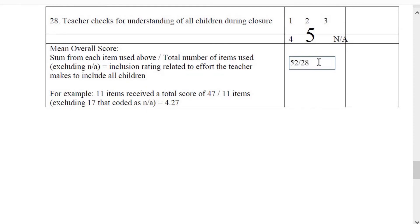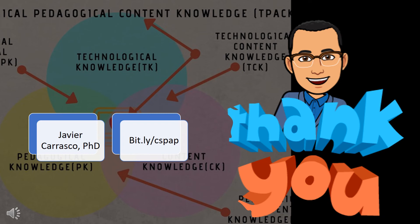In total, the sum from each item used above was 52. The total number of items used is 28, so 52 divided by 28 provides a mean overall score of 1.86, which is the inclusion rating related to the effort the teacher makes to include all children. This was a video in the TPCK video series, which focuses on the LERSPE Inclusion Rating Scale by Dr. Lauren Lieberman. Thank you for viewing this short video on TPCK, and please subscribe.